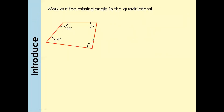Have a look at this question. We've been given three angles in a quadrilateral: 76°, 125°, and a right angle symbol. We need to find angle A. Take one minute, give it a go, and we'll discuss the answer.